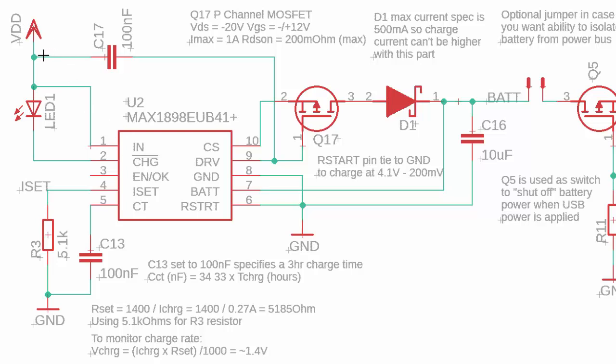Here's the LED controlled during charging. It turns on during charging, turns off when done, and blinks if there's a fault. CT is a timeout capacitor. If the charger runs too long, it shuts off as a safety measure. I'm choosing C13 at 100 nanofarads, which defines around a three-hour timeout. They have a formula for calculating different timeouts. This 34.33 number relates to the RC time constant of the capacitor.